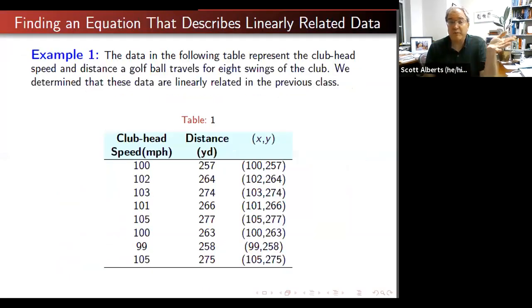Okay, here's our third video. We're going to move on to chapter 4.2, which talks about finding the equation of the line. So again, here's our example from the last video. We have how fast the golf club was hit and how far the ball went. And again, we calculated the correlation 0.94, which is a pretty strong relationship.